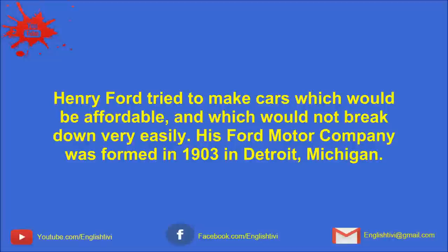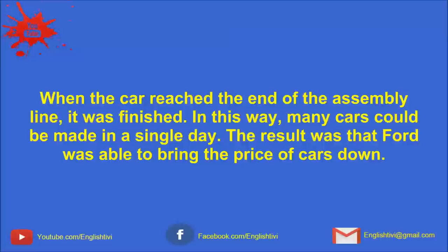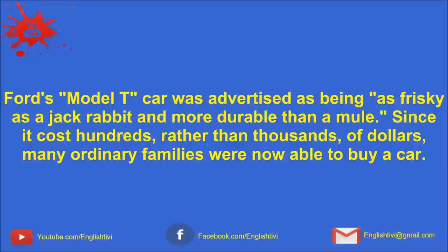One had to know how to repair a car oneself. Henry Ford tried to make cars which would be affordable and which would not break down very easily. His Ford Motor Company was formed in 1903 in Detroit, Michigan. Since many parts had to be brought together to make a car, Ford developed the assembly line. On the line, each worker would do one specific job. When the car reached the end of the assembly line, it was finished. In this way, many cars could be made in a single day. The result was that Ford was able to bring the price of cars down.